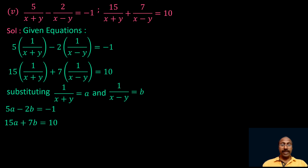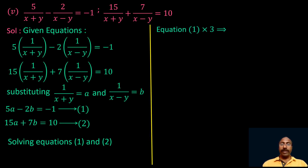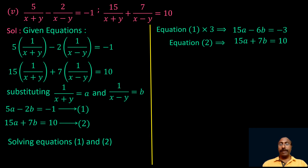These are linear equations in variables a and b. We solve them using the algebraic elimination method. The coefficients of a are 5 and 15, and LCM of 5 and 15 is 15. So we multiply equation 1 by 3, giving 15a minus 6b equal to minus 3. Equation 2 is taken directly as 15a plus 7b equal to 10.